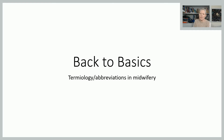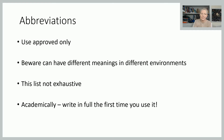There is actually an approved list of abbreviations and you should only be using those abbreviations that are approved within your work area, because different abbreviations can have different meanings in different environments. This list is not exhaustive, and from an academic perspective, if you are writing an abbreviation in academic work, the first time you use it you need to write it in full. For example, GP: write 'general practitioner' then GP in brackets. Likewise NHS: 'National Health Service', NHS in brackets, and then you can use it throughout the rest of your work.